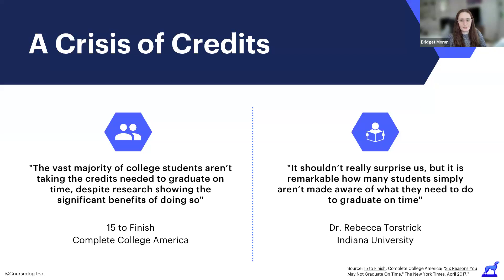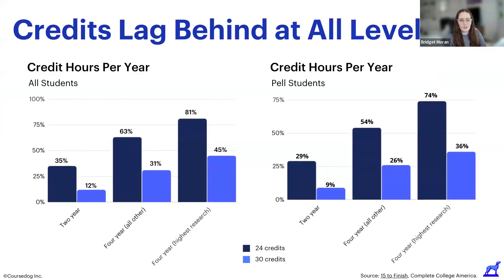It's probably no secret that a significant number of students aren't enrolled in enough credits to finish their degree on time. The 15-to-Finish campaign launched over 10 years ago with the aim of encouraging students to enroll in 15 credits in their first semester to stay on track for on-time completion. While it might seem obvious, many students aren't aware of this, and 15-to-Finish campaigns across the country have shown strong results, but we know there's still work to be done. The data really shows that students aren't taking enough credits to finish their degrees on time.